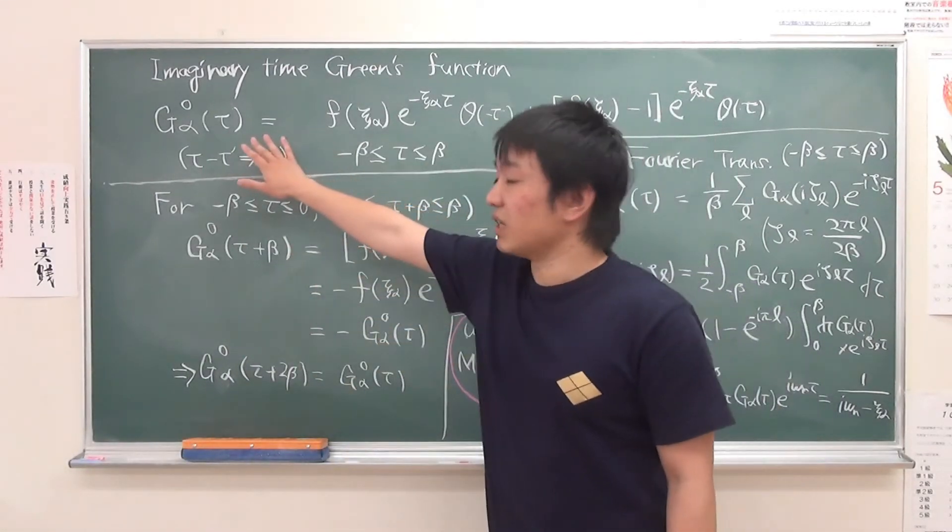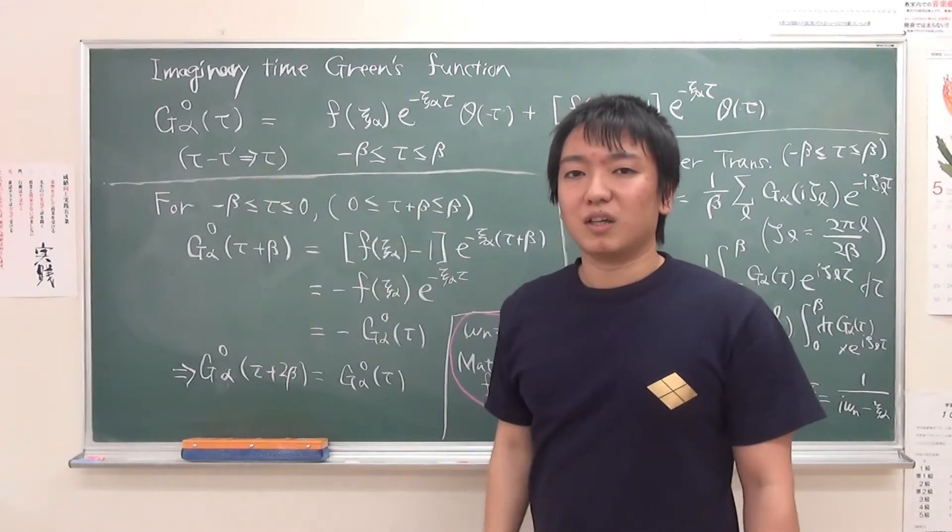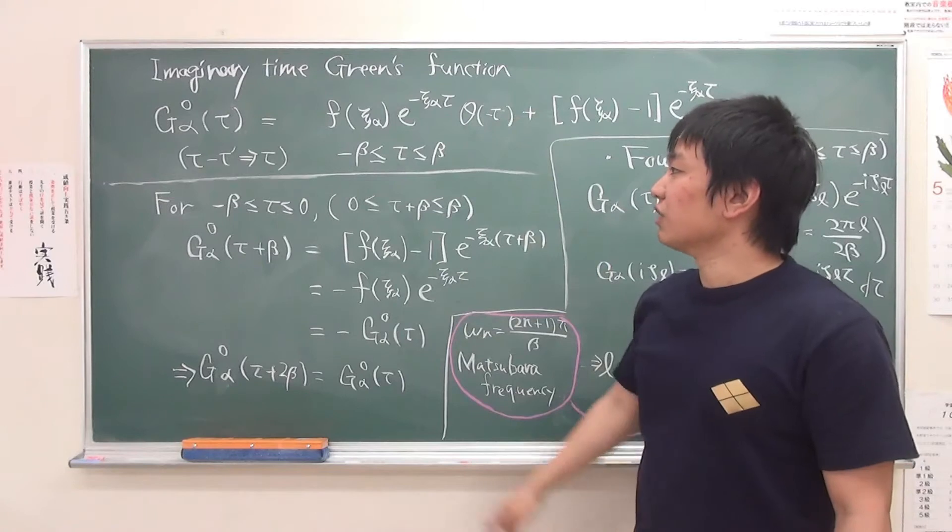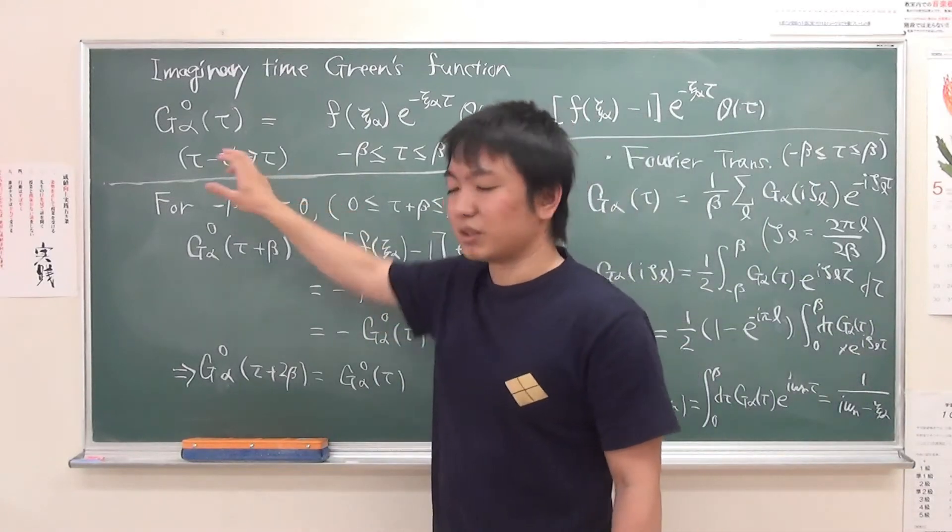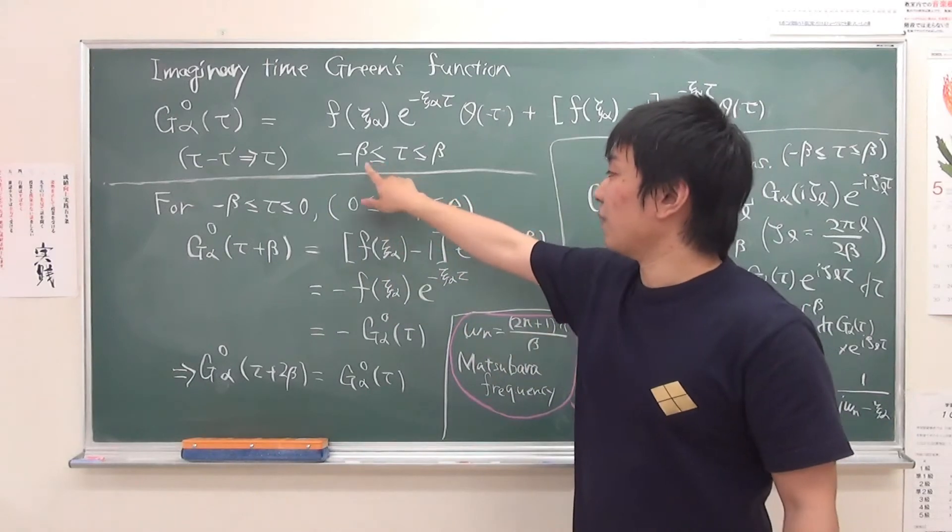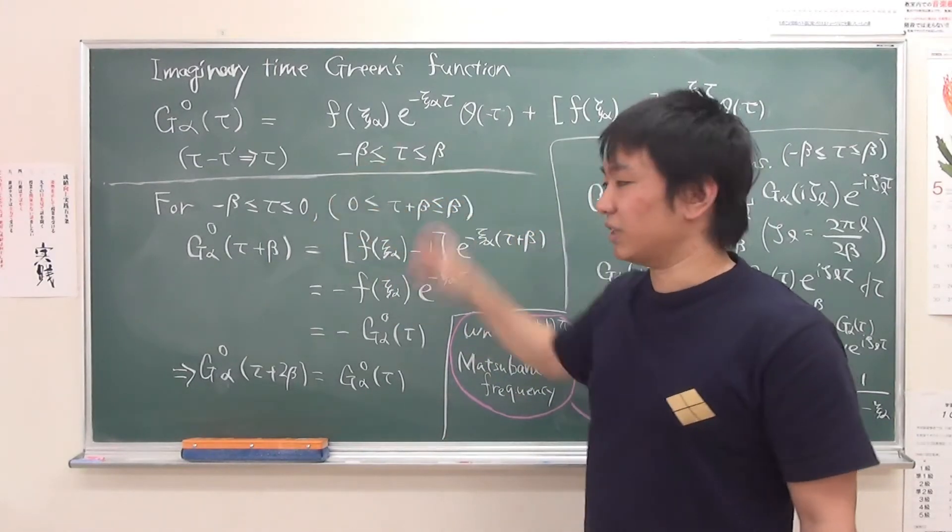So first point, this is imaginary time Green's function introduced in previous section. Now this tau is the difference between two imaginary times and tau runs from minus beta to plus beta.